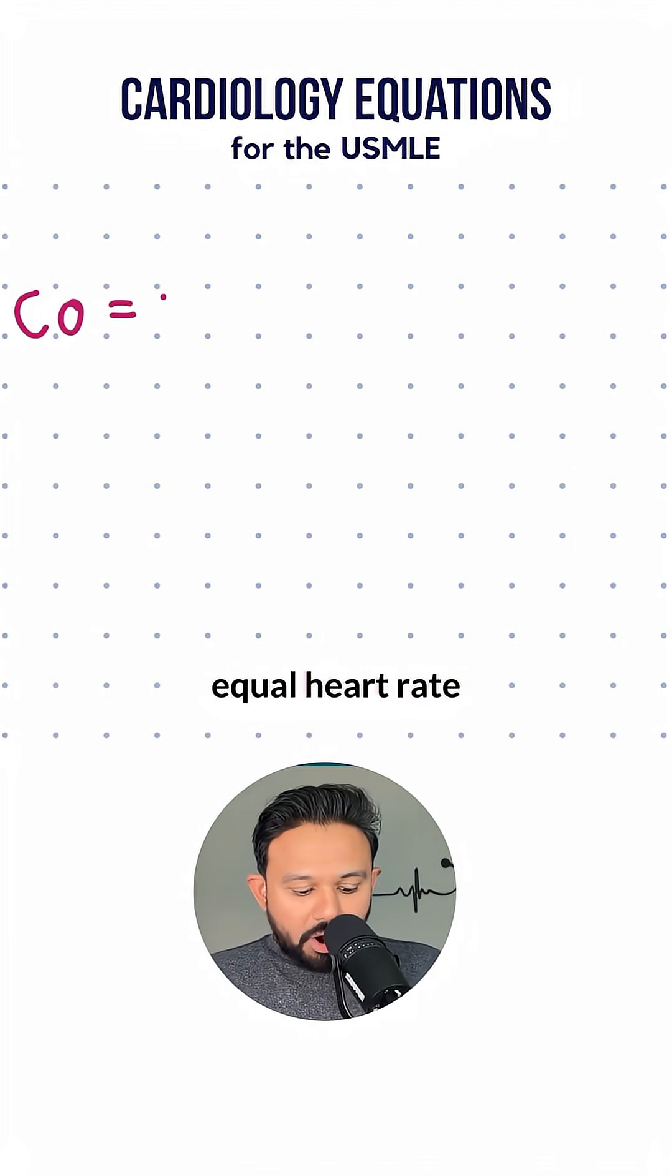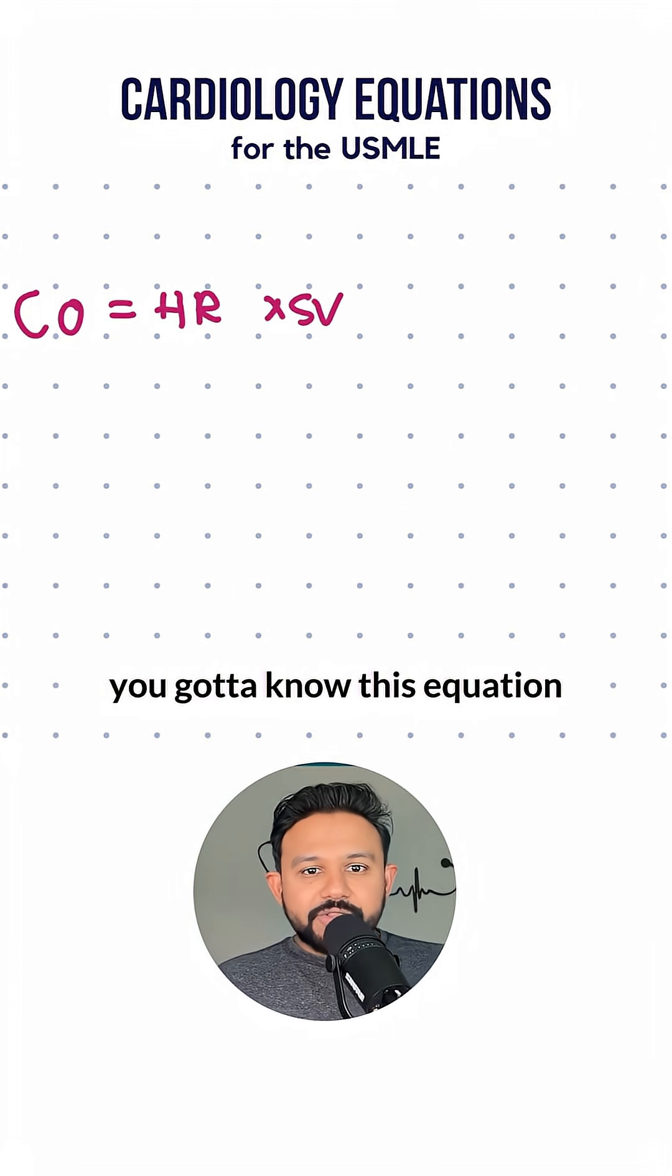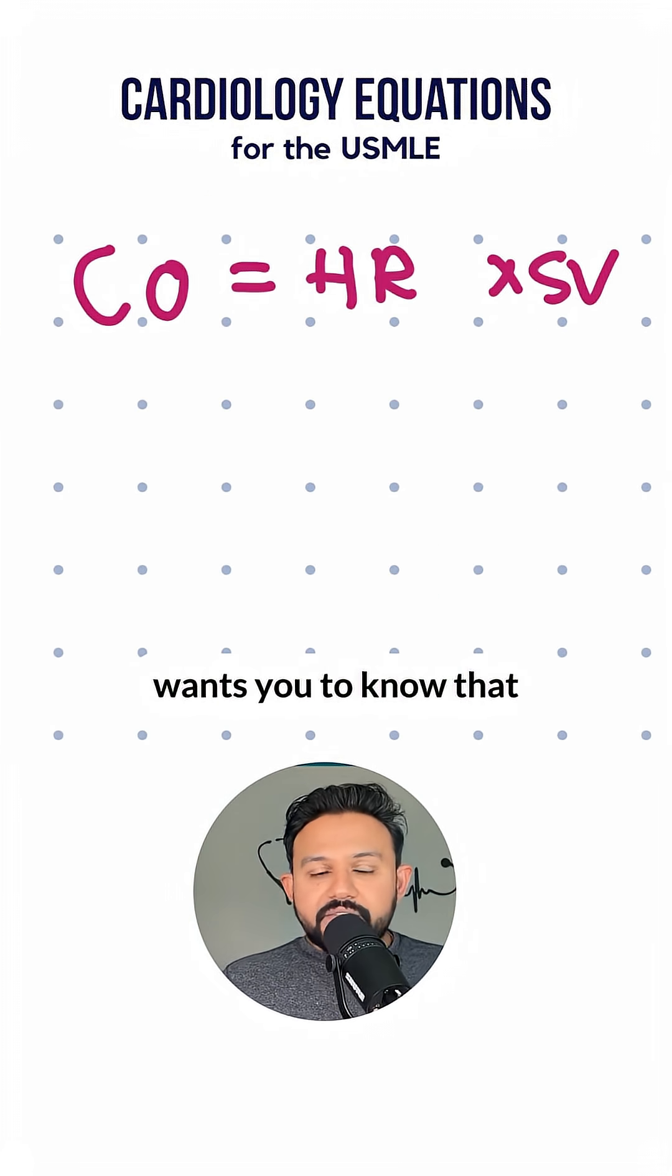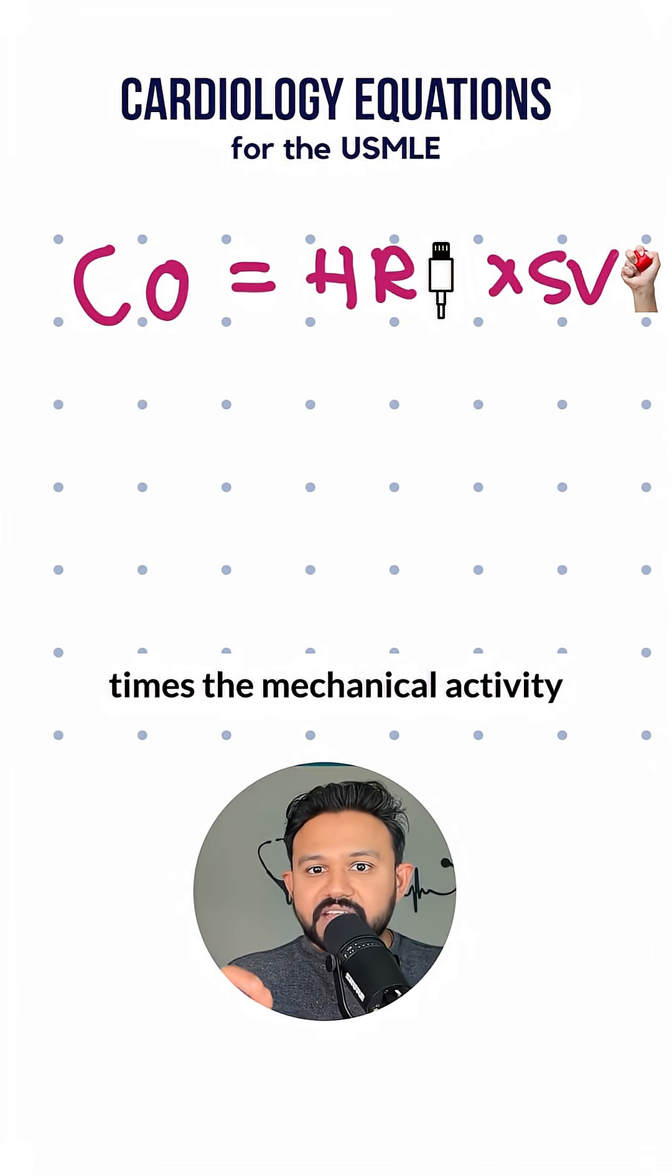Cardiac output is going to equal heart rate times stroke volume. You got to know this equation because the USMLE wants you to know that cardiac output is the electrical activity times the mechanical activity.